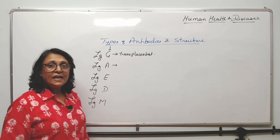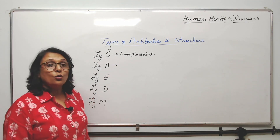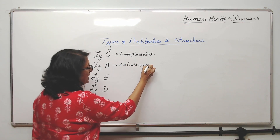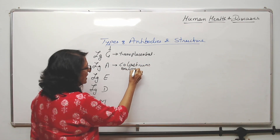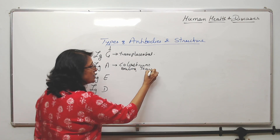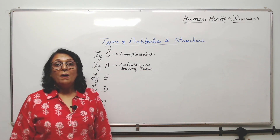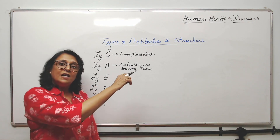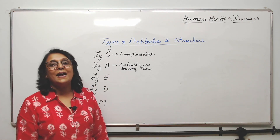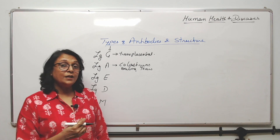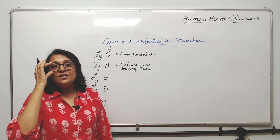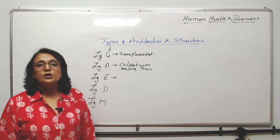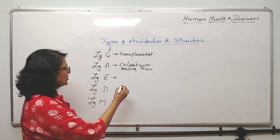IgA is present in colostrum, saliva, and tears. So after the birth of the baby, the mother is still giving ready-made antibodies, but now the antibody has changed to IgA. IgA and IgE are responsible for allergic reactions.